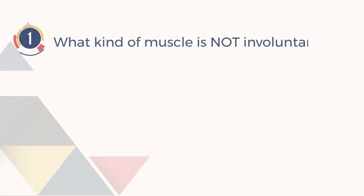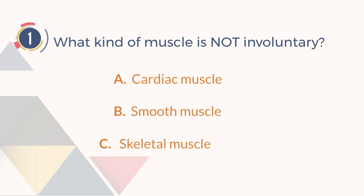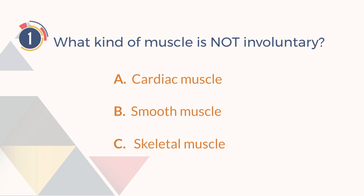Number 1. What kind of muscle is not involuntary? A. Cardiac muscle. B. Smooth muscle. C. Skeletal muscle. The answer is C. Skeletal muscle.